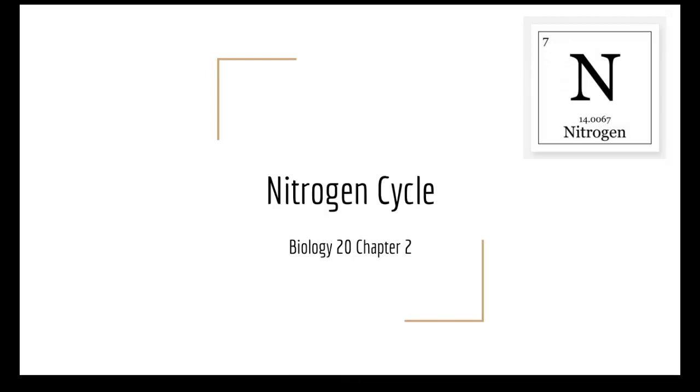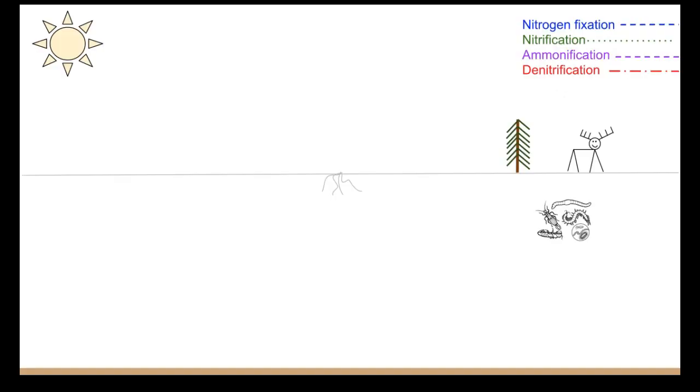Hi Bio 20, in this video we're going to be talking about the very last biogeochemical cycle, which is the nitrogen cycle. This is going to be the outline for my diagram. I have some biotic things like a tree and a moose and my decomposers.